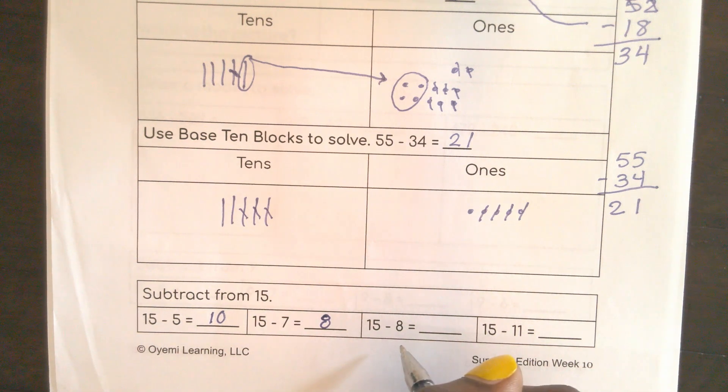15 minus 8. I could take 5 away, of course, end up with that 10. This one, I'm going to take 3 away and I would end up with 7.